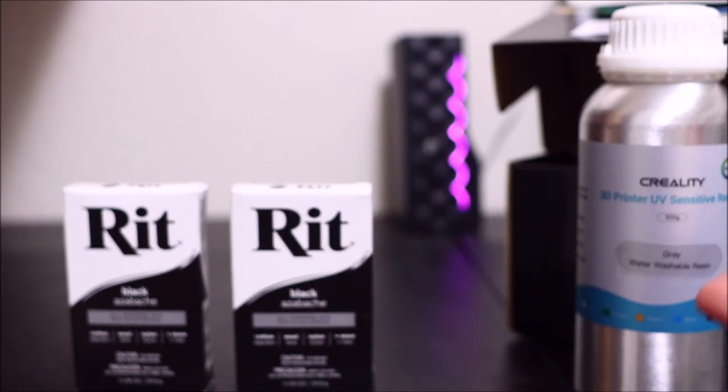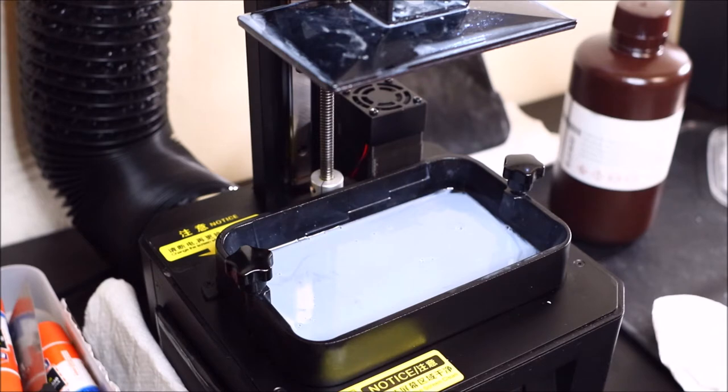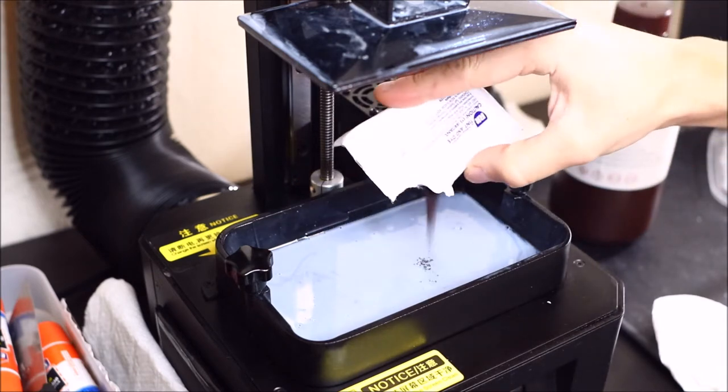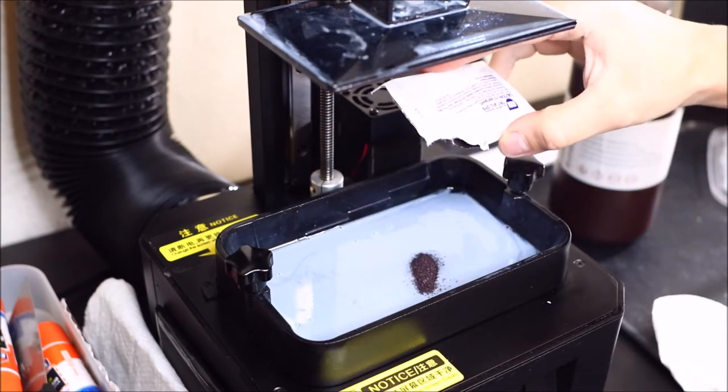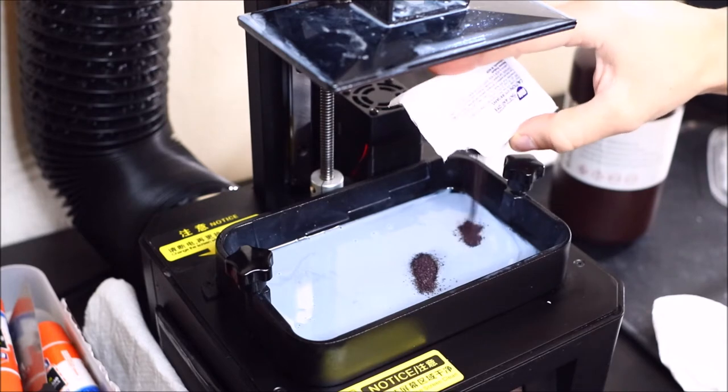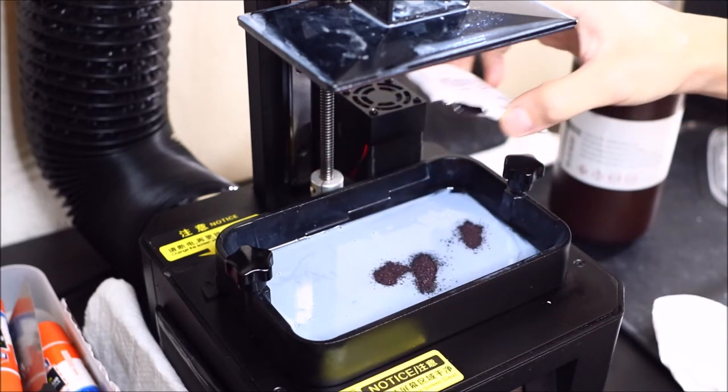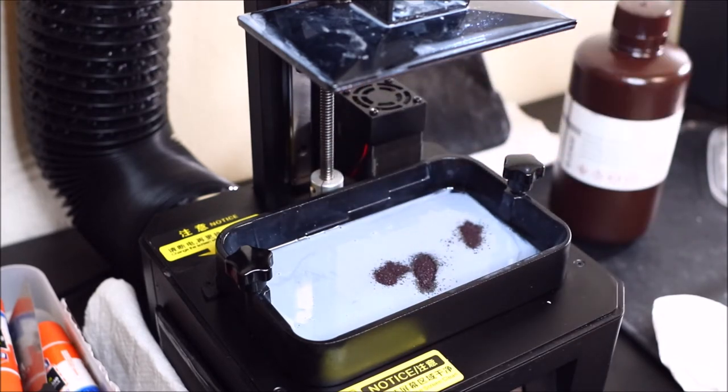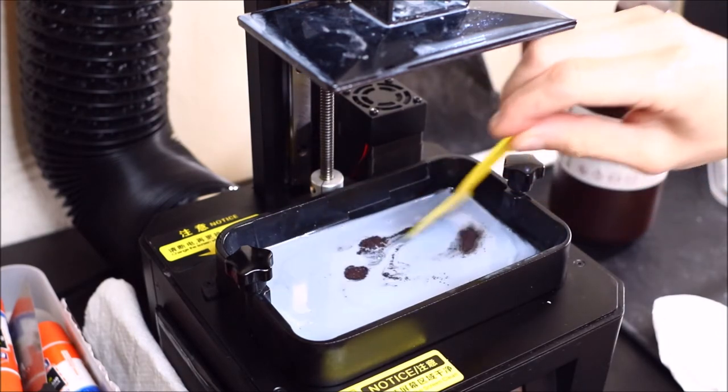But before I did that, I had some gray resin still left in the vat, so I thought let me just try with this small amount that's in the vat before I change it over to the flesh. And it didn't work. The crystals are like one millimeter big and the print layers are like 0.05 millimeter, so it wouldn't work and it wasn't dissolving.